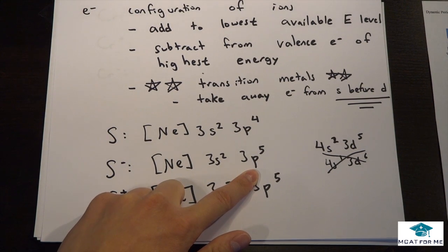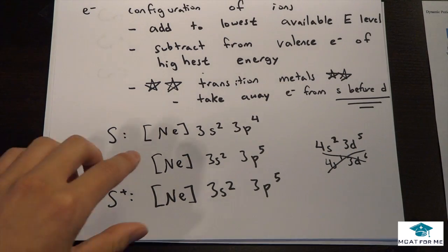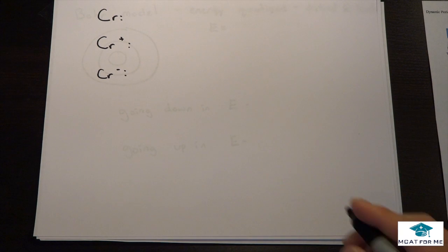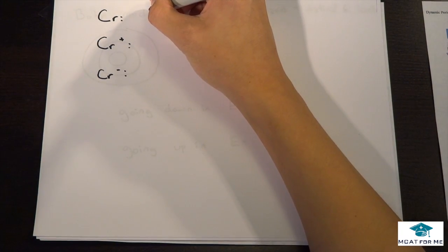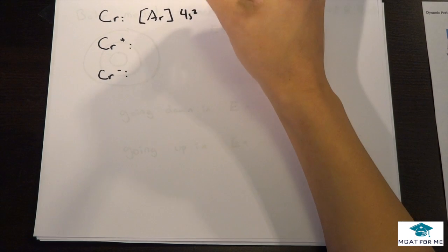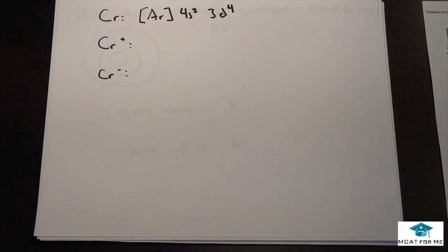You probably were thinking, oh, what is he talking about adding to the lowest available energy level? This is mainly for the transition block, and we'll see that right here. So chromium would be [Ar] 4s² 3d⁴.